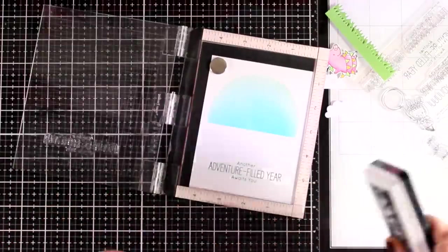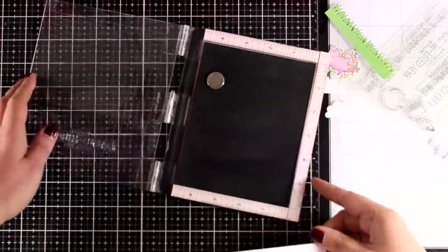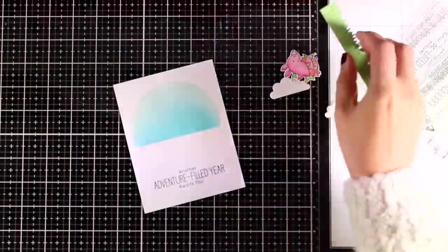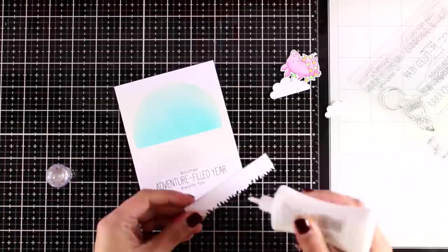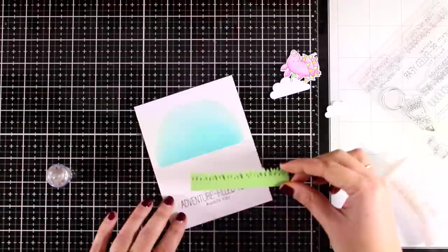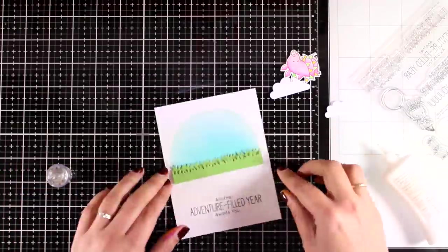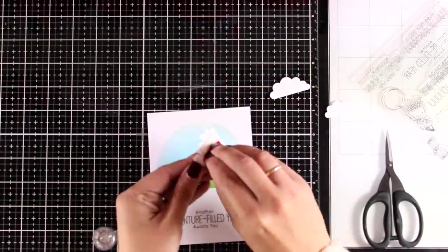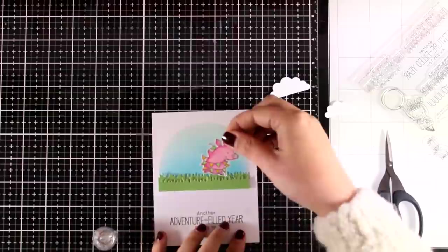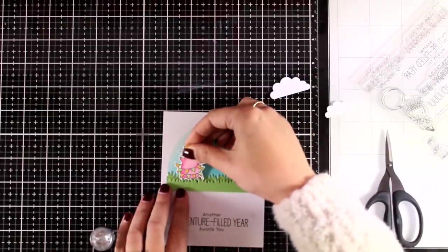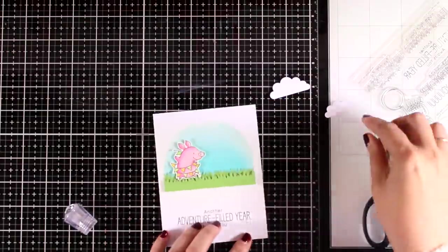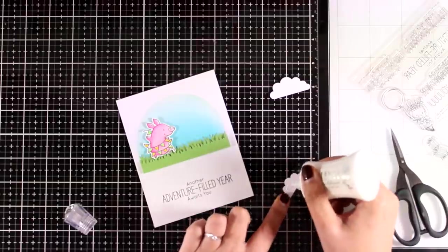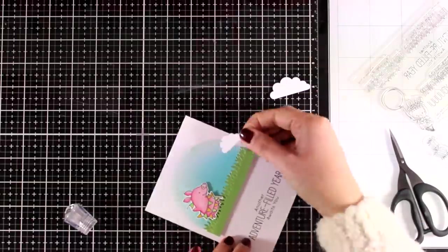Now to put my card together, I have used an old die from my stash to cut out two rows of grass, which I have stuck one on top of the other with foam tape. So this strip of grass is kind of two-dimensional. I'm popping the pig on top just in between those grasses.